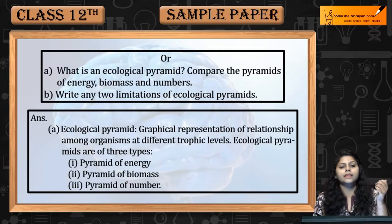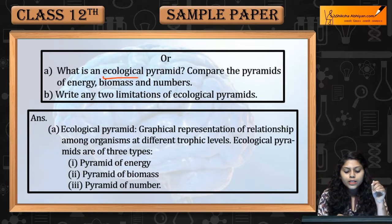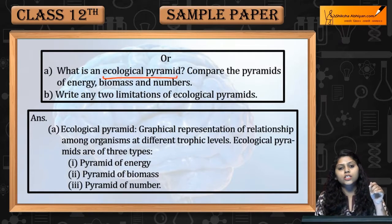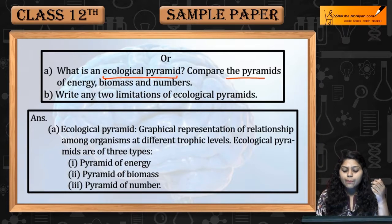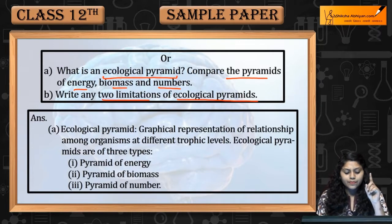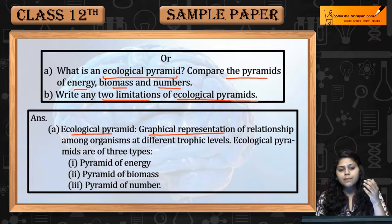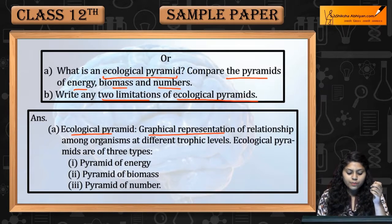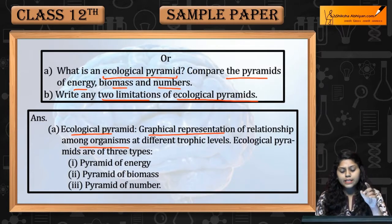Fittest organism survive karta hai aur reproduce karta hai taaki woh apni progeny ko aage badha sake — yeh Darwin ki fitness hai. Ab second part: What is an ecological pyramid? Kya hota hai ecological pyramid — compare karo pyramids of energy, biomass, and numbers. Sabse pehle, ecological pyramid graphical representation hai relationship among organisms at different trophic levels. Teen type ke hain: energy, biomass, and number.